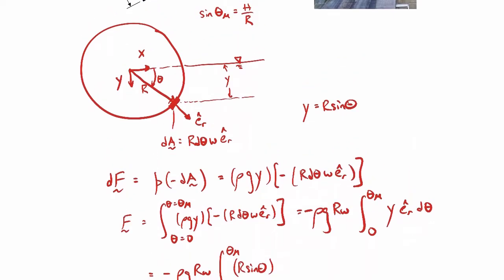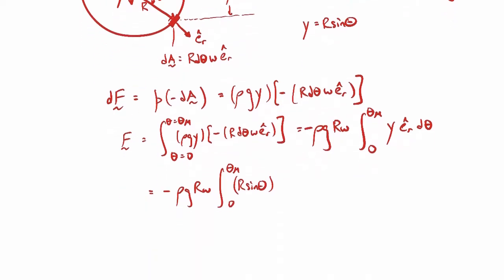Now let's fix the radial unit vector e_r hat. Since we want the force in the x and y directions, we rewrite it in terms of i hat and j hat. Zooming in on the small area: e_r hat broken into components gives e_r hat = cosθ î + sinθ ĵ. So we can write that down: cosθ î + sinθ ĵ, and then there's our dθ. Now everything is in terms of theta so we can evaluate the integral.